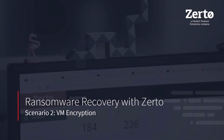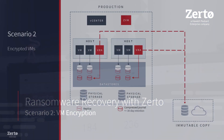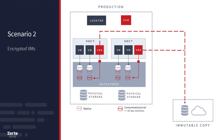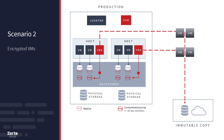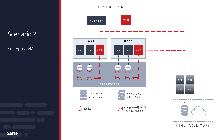This is the second video in a series on Ransomware Recovery with Zerto. In Scenario 2, our architecture is the same as the first, including using Continuous Data Protection or CDP to replicate locally and then also sending a copy to Immutable Storage on Microsoft Azure, Amazon S3, or any S3-compatible repository.